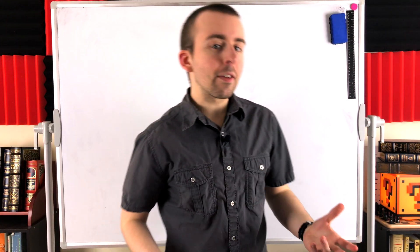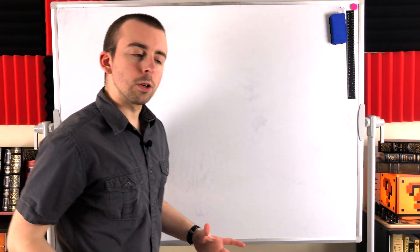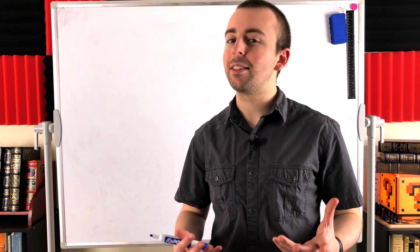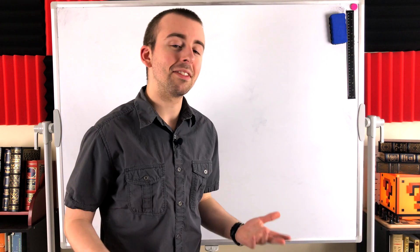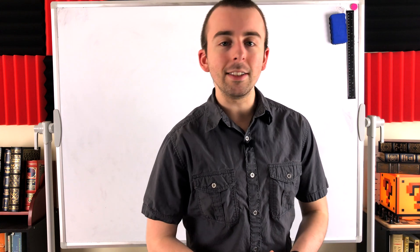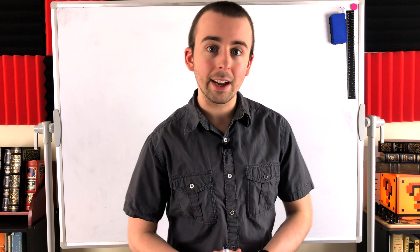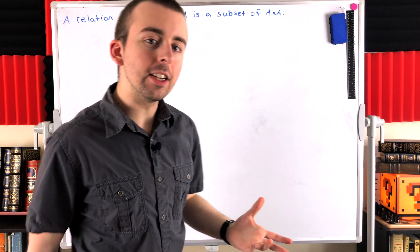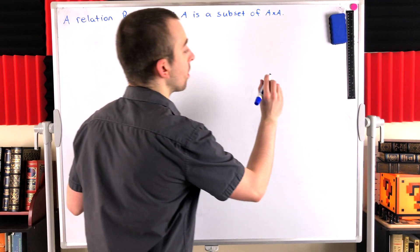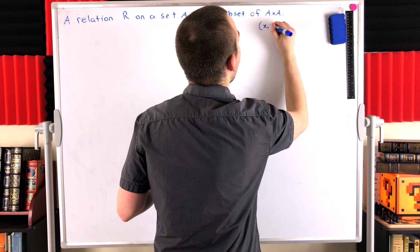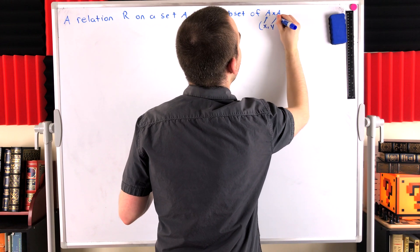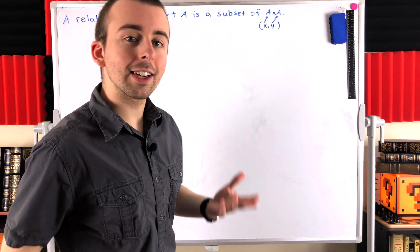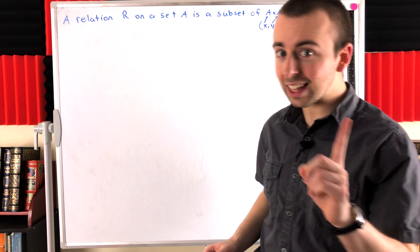There are several different definitions you might see for relations. In this video, I'll introduce the one that I think is best to start with. All the definitions of relation have the same basic intention, so if you understand this one, you'll have an easy time understanding others. So here it is: a relation R on a set A is a subset of the Cartesian product A cross A. The Cartesian product A cross A is the set of all ordered pairs (x, y) where x is an element of A and y is an element of A. So given a relation R on a set A, it's just a subset of A cross A — a set of some ordered pairs.